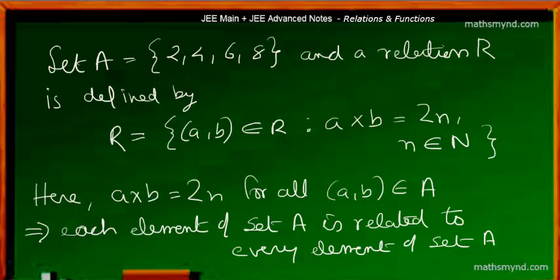And suppose a relation R is defined by: (a, b) is an element of R such that a times b, that is the Cartesian product, is equal to 2n, where n is an element of capital N, that is the set of natural numbers.